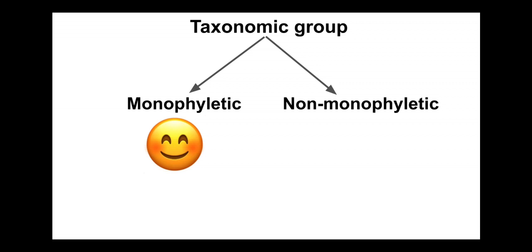In taxonomy there are generally two ways that we can group things. We can group things as monophyletic groups, which recognize the evolutionary ancestry and the ancestors of the taxa, or we can group things non-monophyletically, which means we're grouping things based on similarities and ignoring some aspect of the actual evolutionary history.